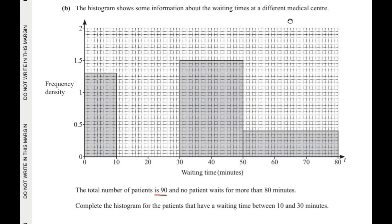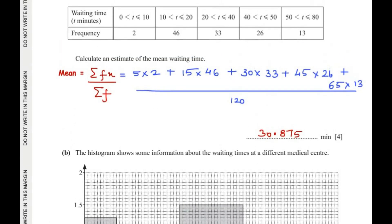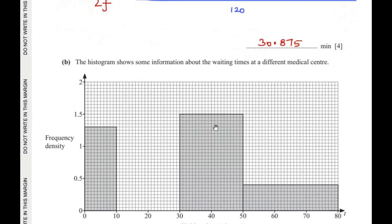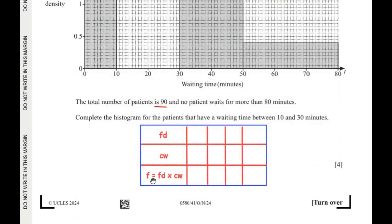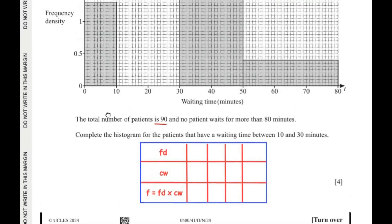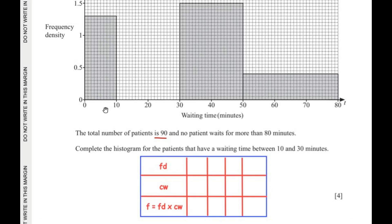Here the frequency is not directly given, but frequency density is shown on the histogram. We use the formula: frequency = frequency density × class width. So to find the frequency for any interval, we multiply the frequency density read from the histogram by the corresponding class width.